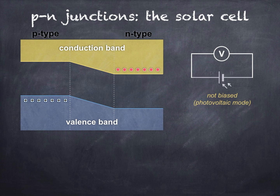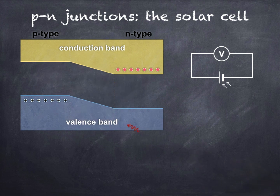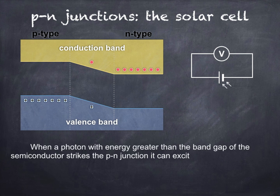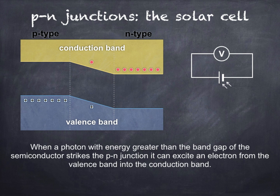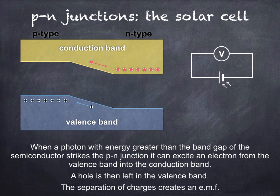This is the basis for how solar cells operate, so let's see it in action. Looking at the circuit diagram, you'll see the symbol for a solar cell with a voltmeter connected across it to measure the output voltage or EMF. When a photon of energy greater than the band gap of the semiconductor strikes the P-N junction, it can excite an electron from the valence band into the conduction band — a hole is also left in the valence band. The electron moves to the conduction band of the N-type and the hole moves to the valence band of the P-type. The separation of the charges creates an EMF — this is known as the photovoltaic effect. If the light source is moved closer to the solar cell, a greater number of photons strike the solar cell per second, resulting in greater separation of charges as more electron-hole pairs are produced, and a greater EMF is measured.